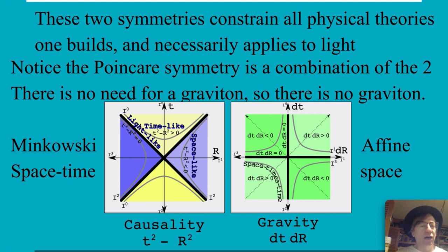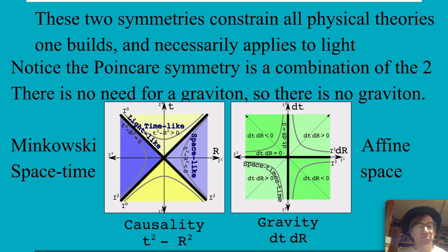One of the major impacts of this proposal is that there will be no graviton. That's not going to be popular at the 22nd Eastern Gravity Meeting. But I think it's a pretty simple, logical consequence of the proposal, because there is no particle associated with the ground rules of special relativity — special relativity rules are just that. And now we've got a few more rules that happen in the affine space, and that's the way it goes.